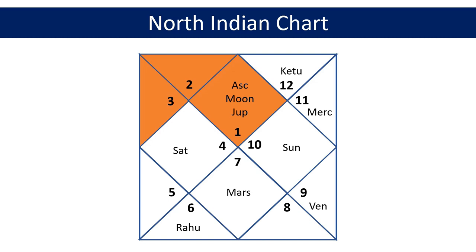Similarly, the second zodiac sign Taurus or Rishabha represented by 2 is placed in the second house, and the third zodiac sign Gemini or Mithuna represented by 3 is placed in the third house and so on. I hope you are now clear on how to identify houses in the North Indian chart and won't get confused when you see numbers that do not match with the house positions.